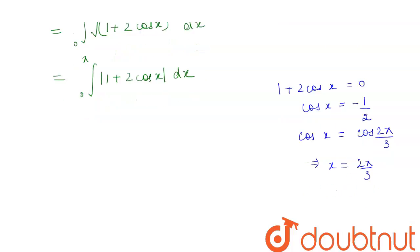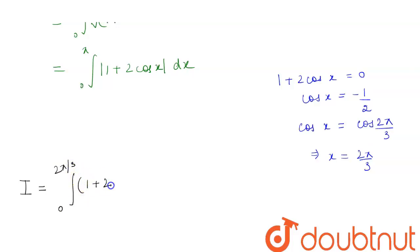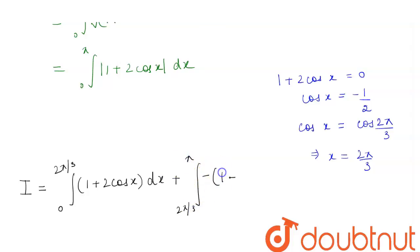So the integral is divided into two parts. I equals the integration from 0 to 2π/3 where the function is positive, giving (1 + 2cosx) dx, plus the integration from 2π/3 to π where the function is negative, giving −(1 + 2cosx) dx.